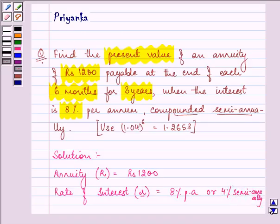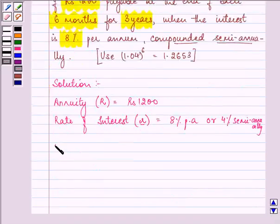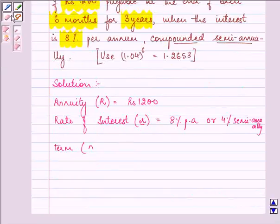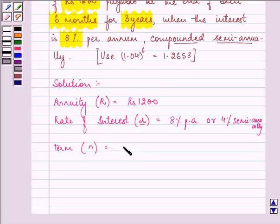And we are given the term, that is the time that we will be writing as n, is given to us as 3 years, which means 3 into 2, 6 semi-years.